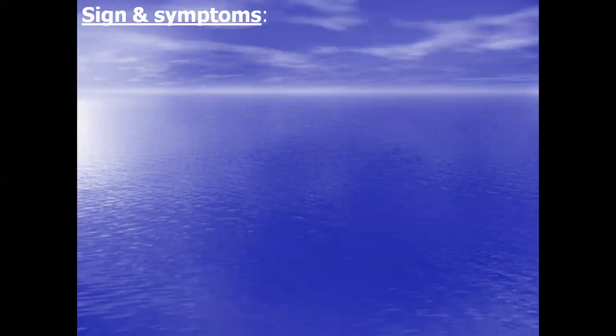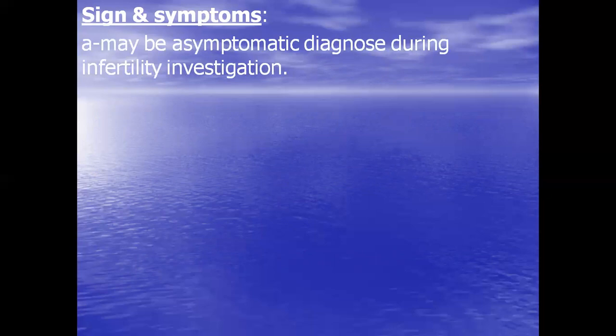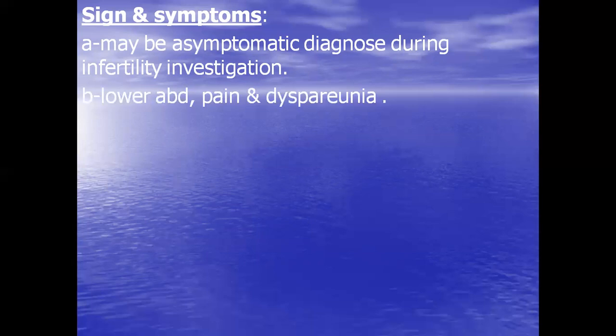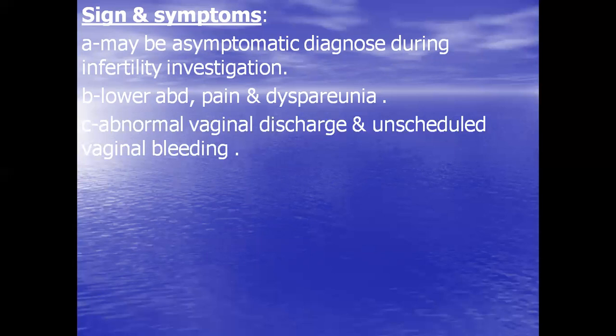Regarding signs and symptoms: the patient may be totally asymptomatic, with the diagnosis made during infertility investigation, as PID leads to severe adhesions. The patient may present with infertility, lower abdominal pain, dyspareunia, abnormal vaginal discharge, and unscheduled vaginal bleeding.